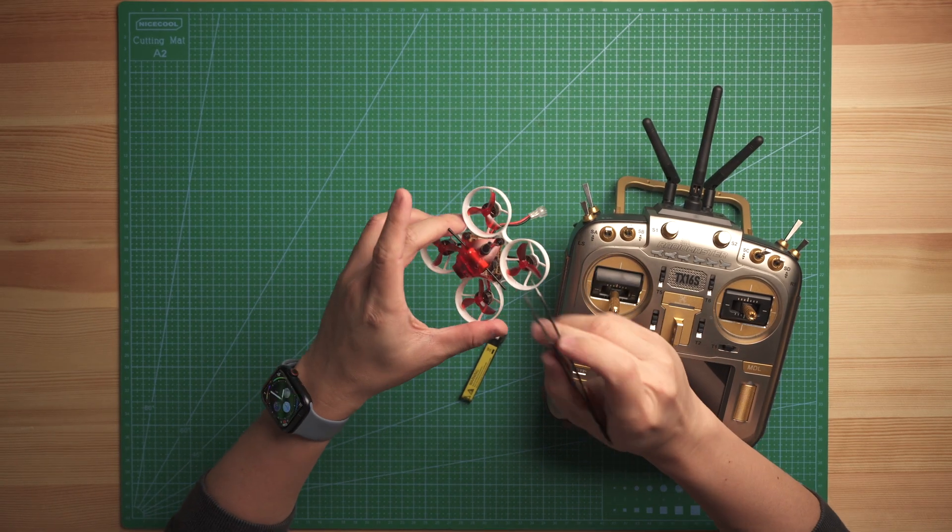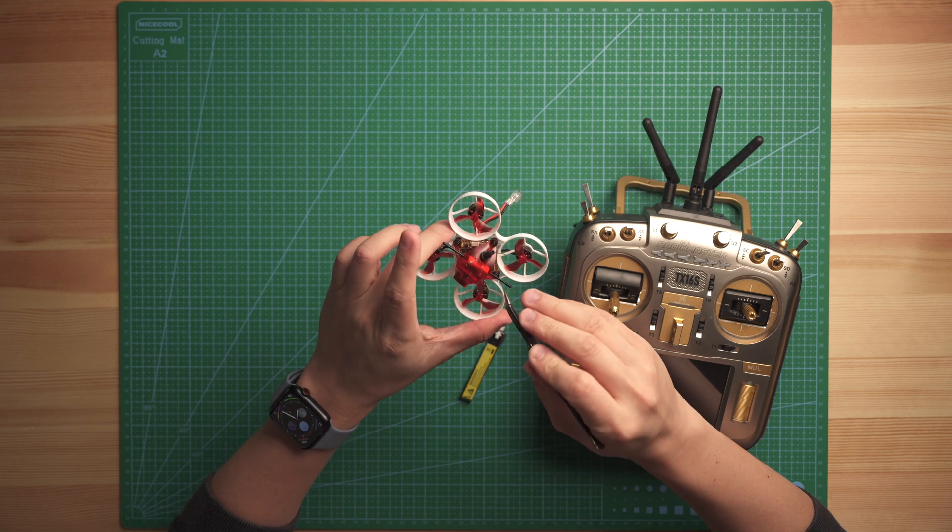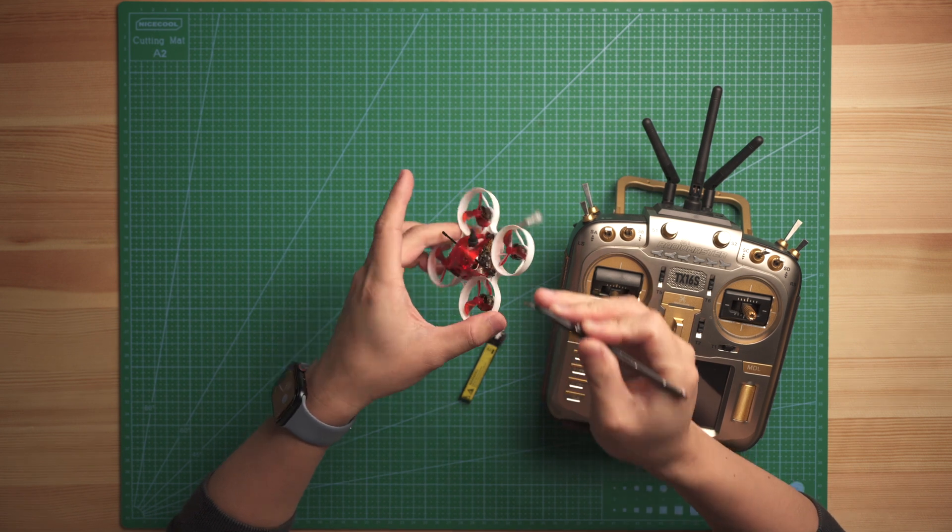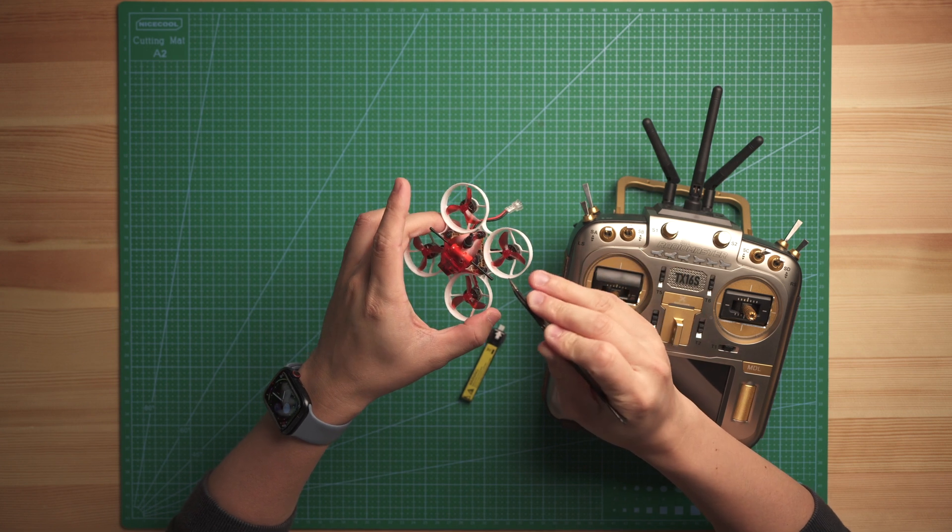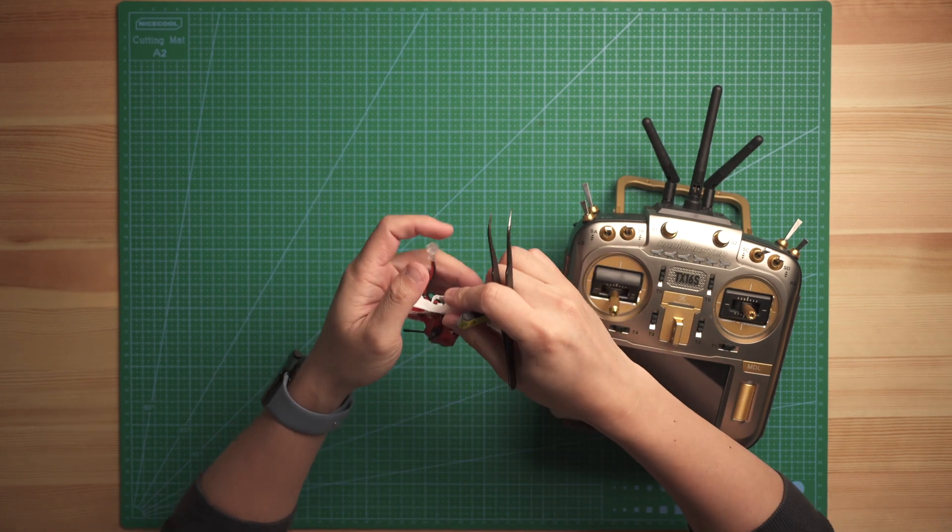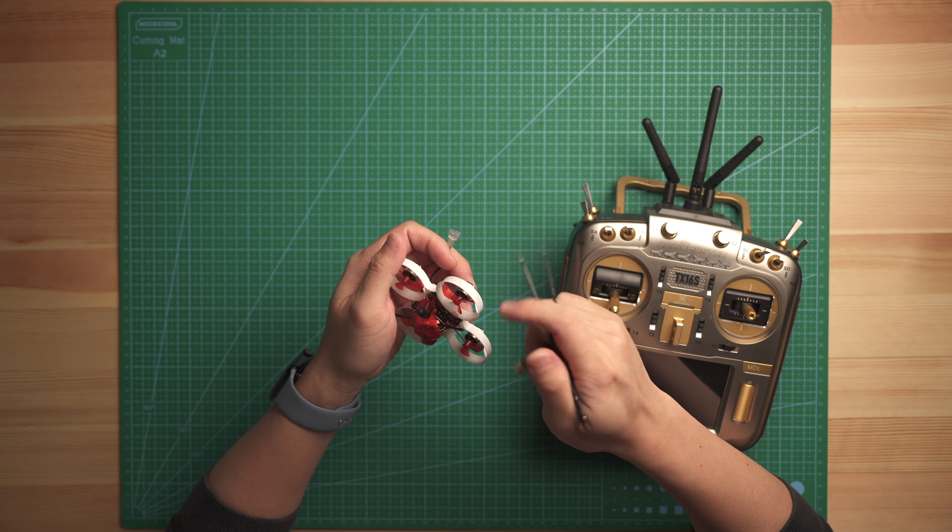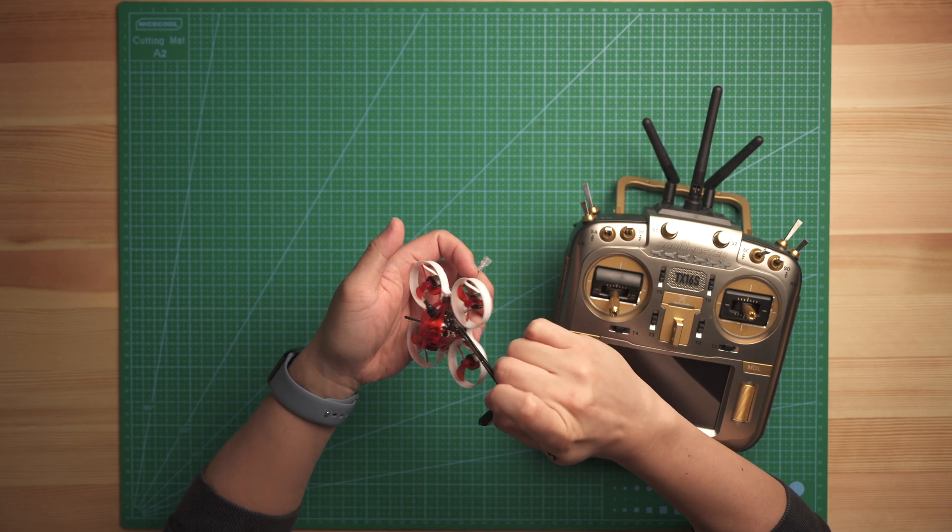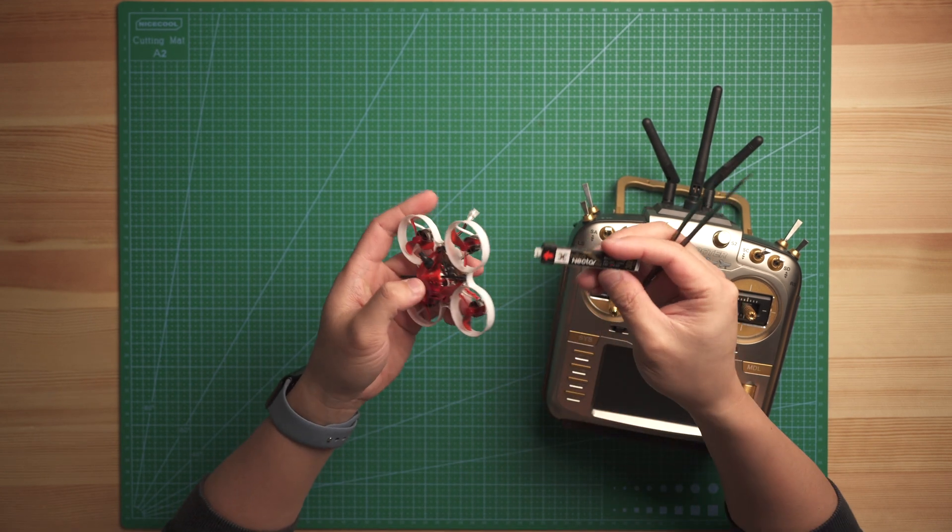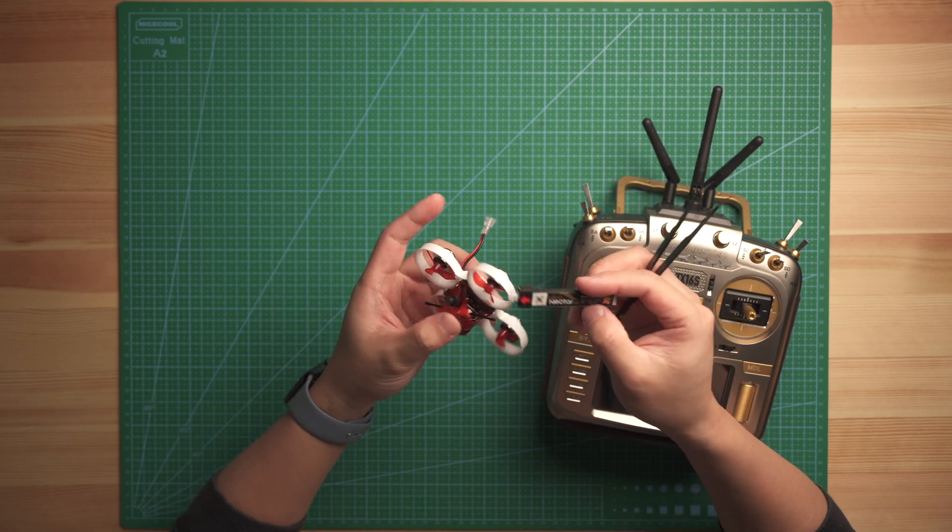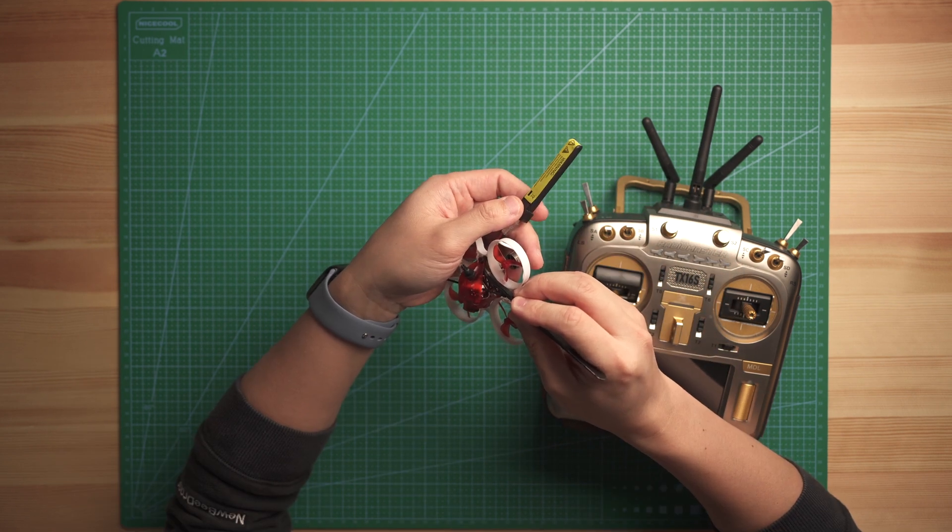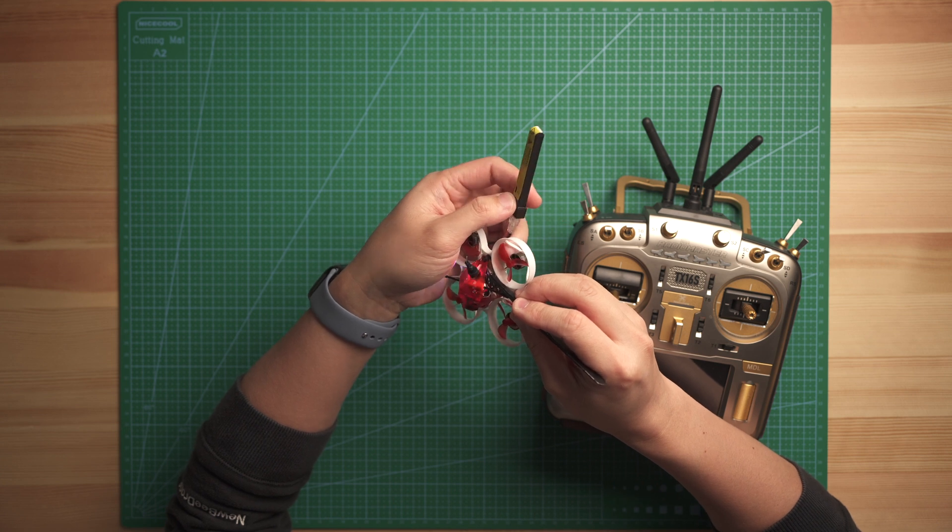Alright the first step I will show you how to put the ghost receiver into binding mode. This is actually not just a binding mode, it's also a factory preset you can do. You will need to power the drone at the same time you hold the bind button. You can either use a battery to power the drone or use a USB port to power the drone. Hold the bind button at the same time you power on the drone.